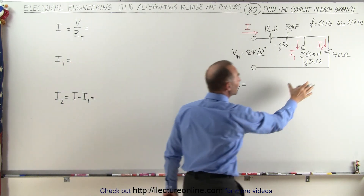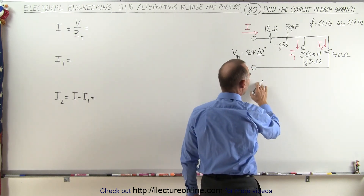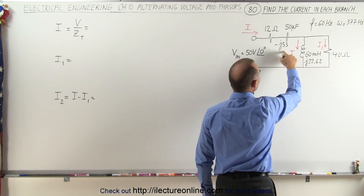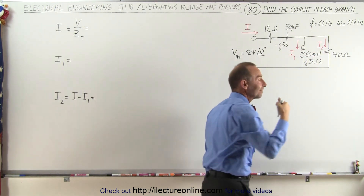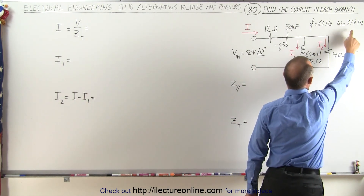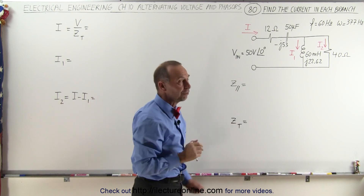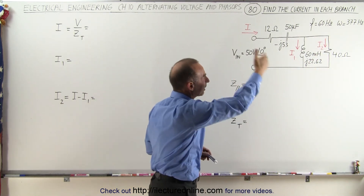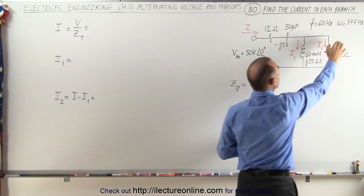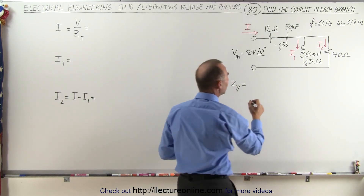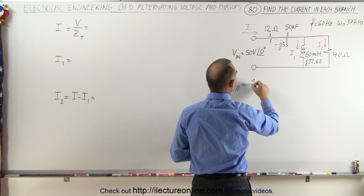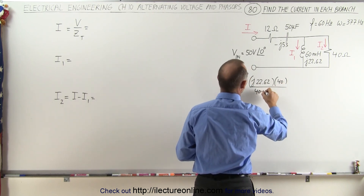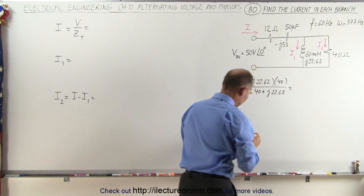So start by finding the impedance of the two parallel branches. That would be equal to the product divided by the sum. We've already calculated the inductive reactance and the capacitor reactance. Notice that the frequency of the circuit is 60 hertz — that means 60 cycles per second — and omega is 377 radians per second. In order to calculate the inductive and capacitor reactance, we have to use omega. So the parallel impedance equals J22.62 multiplied times 40, divided by 40 plus J22.62.